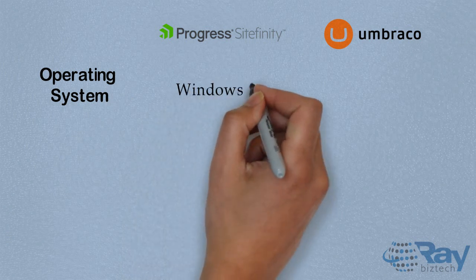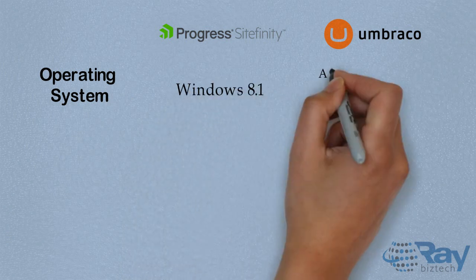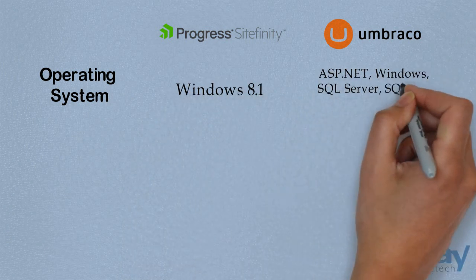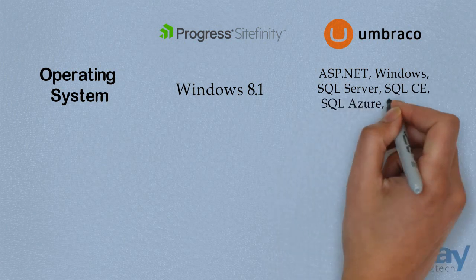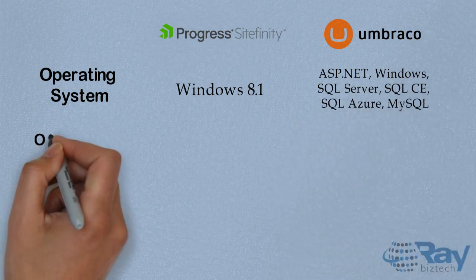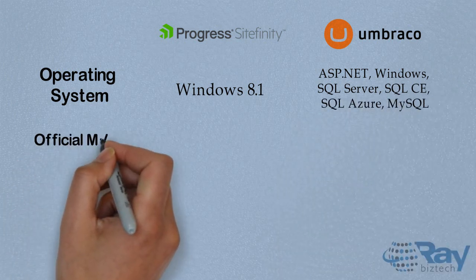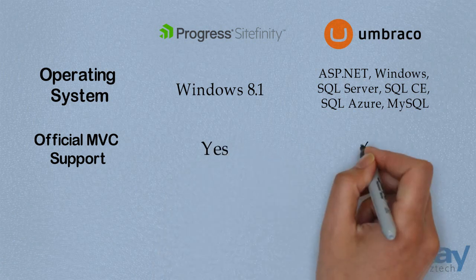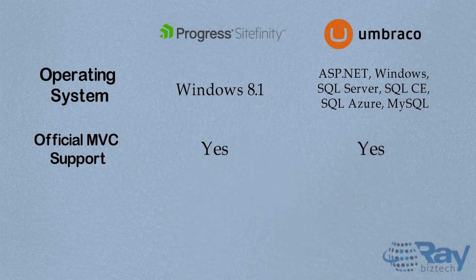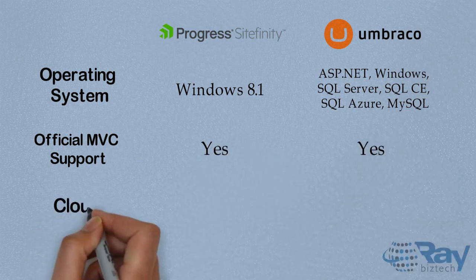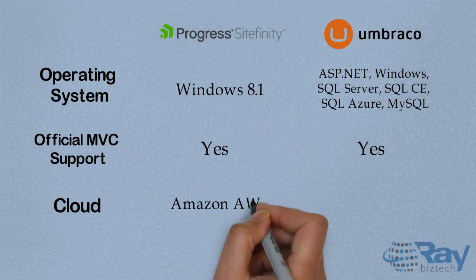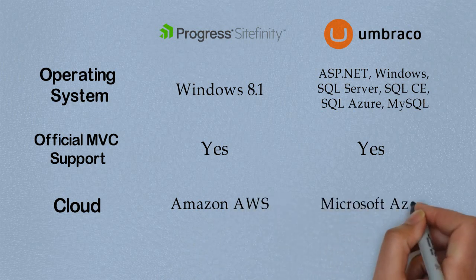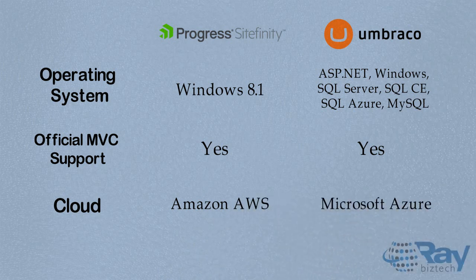Operating System for Sightfinity is Windows 8.1. For Umbrako, it's ASP.NET, Windows, SQL Server, SQL OS, SQL Azure, and MySQL. Official MBC support: Sightfinity supports MBC, and Umbrako also supports MBC. Cloud: Sightfinity uses Amazon AWS, and Umbrako uses Microsoft Azure.